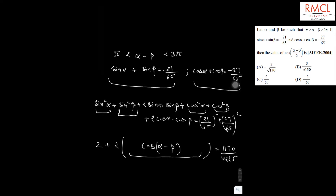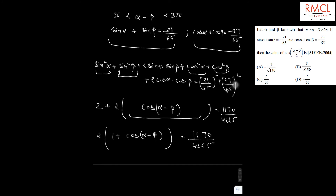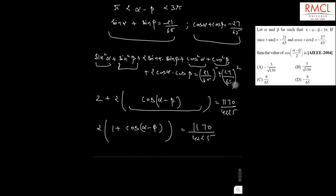It is equal to 1170 divided by 4225. If we take 2 common, then 1 plus cos(alpha minus beta) equals 1170 divided by 4225. And we know that 1 plus cos(alpha minus beta) equals 2 cos squared((alpha minus beta) by 2), so 2 cos squared((alpha minus beta) by 2) equals 1170 by 4225.